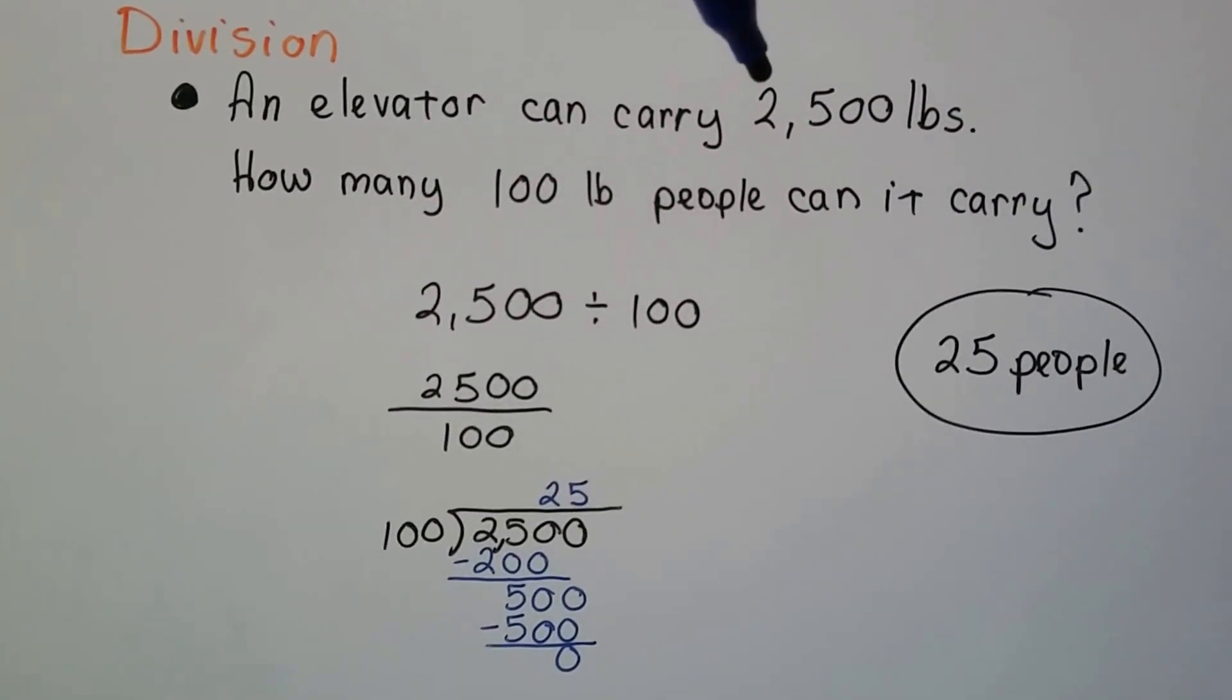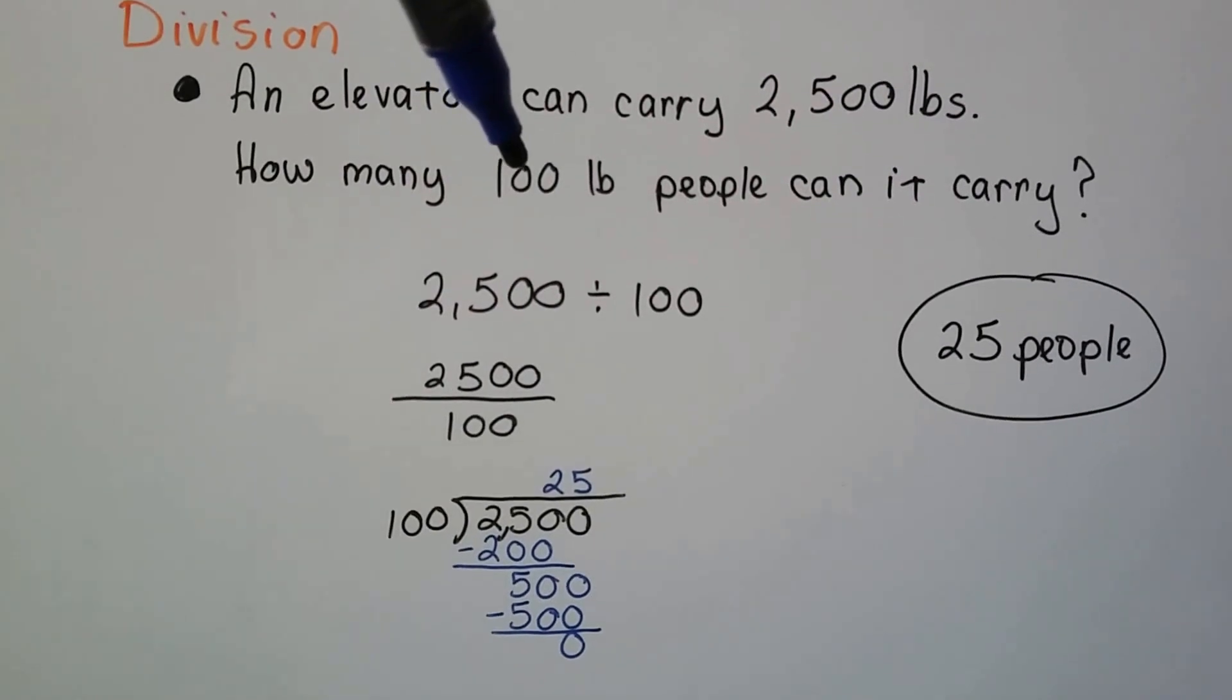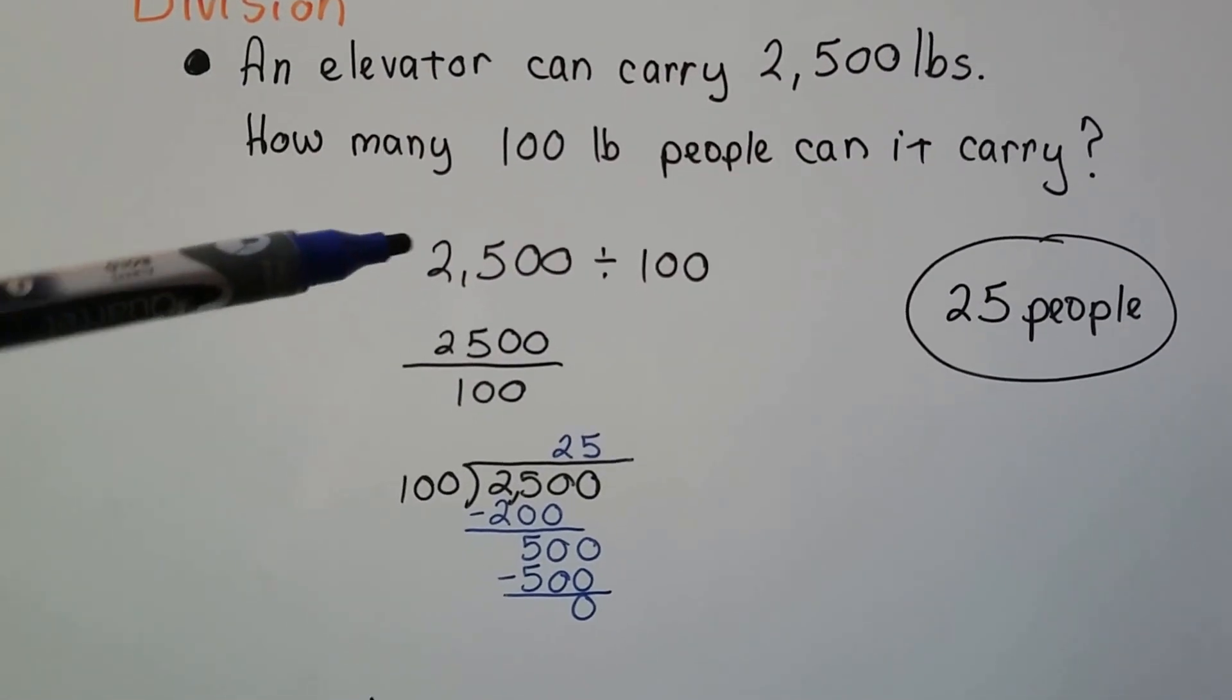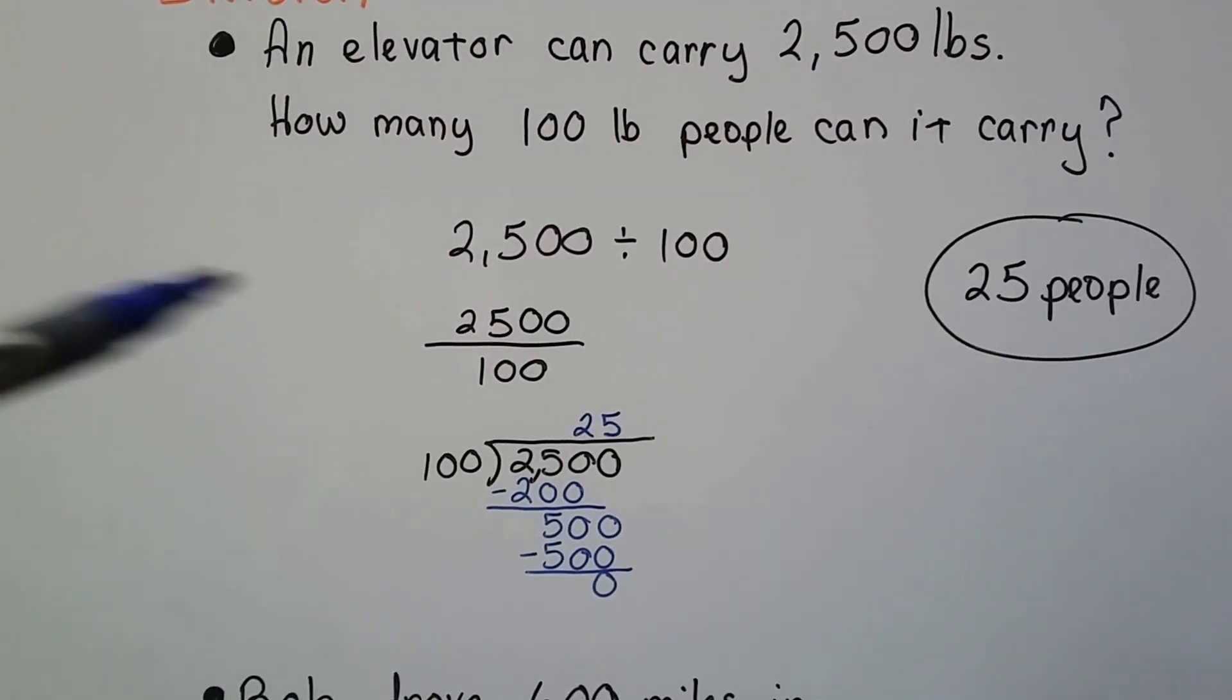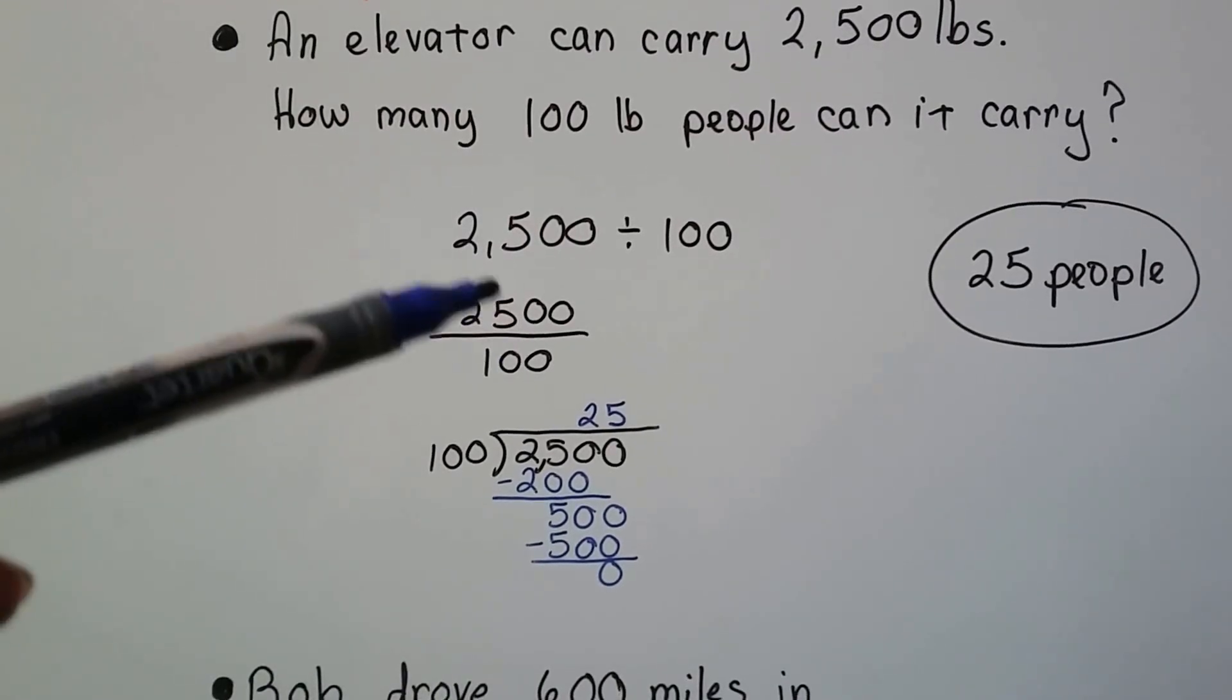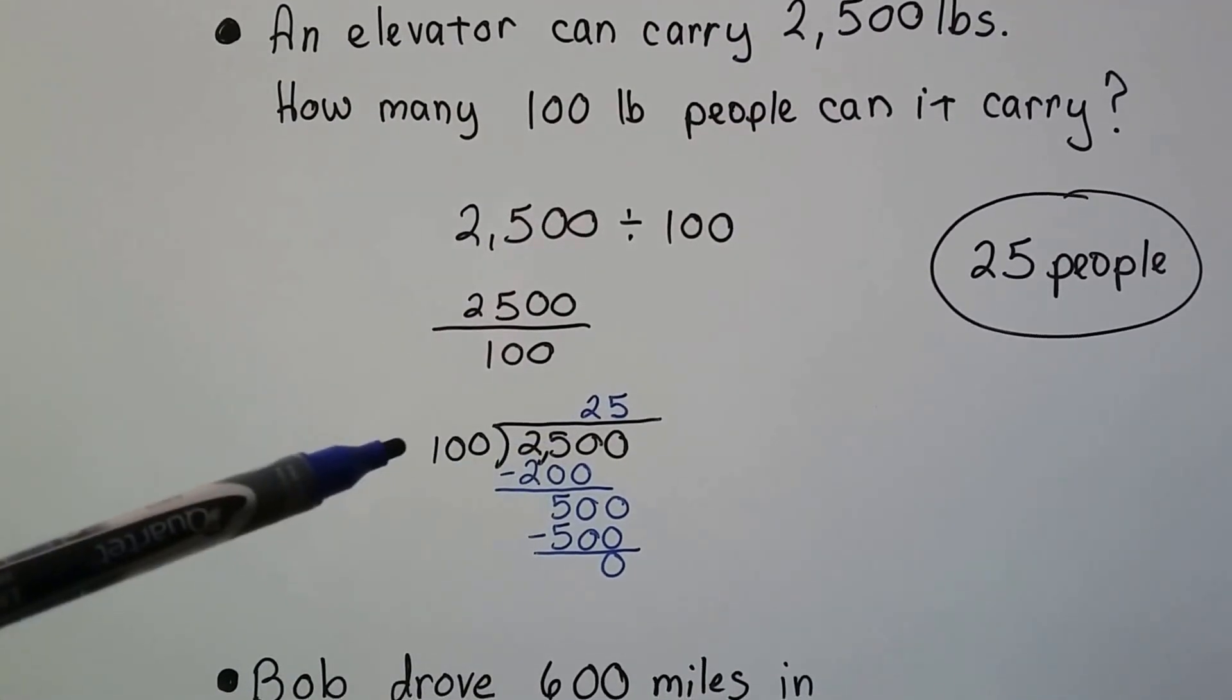Well, we're just going to divide the 2,500 by the 100 to figure out how many people it can carry. And you might see it with the little division sign like this. You might see it as a fraction. 2500 divided by 100. You might even see it the long division way.